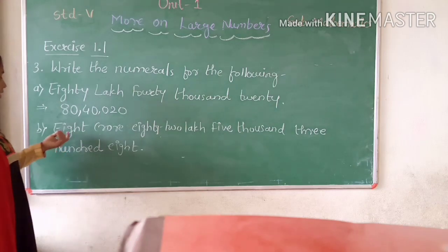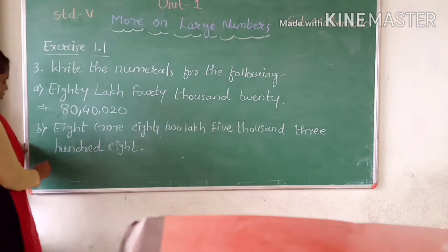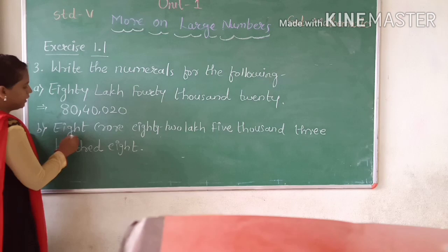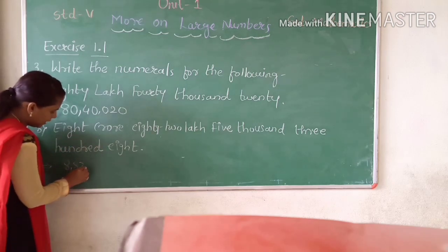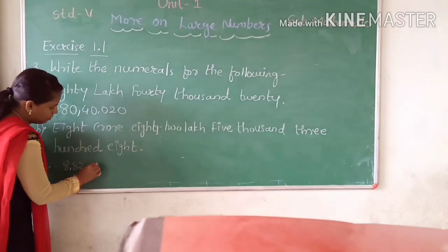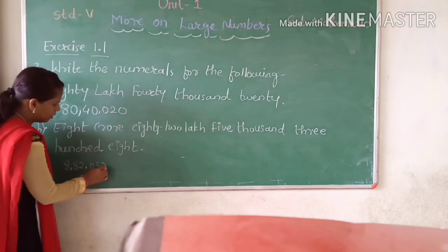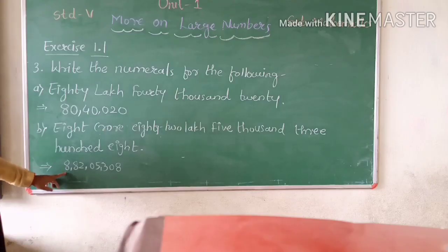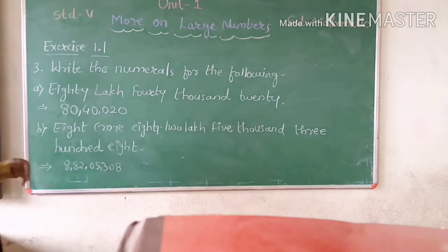The next question is 8,82,5,308. So write this number: 8 crore, 40 lakh, 8 - wait - 8,42,5,000. The 10,000 place is empty - 5,300. The tens place is also empty - 8. So the answer is 8,42,5,308.